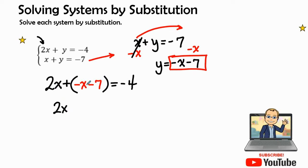So I have 2x plus a negative x. Positive and a negative is a negative, so it has a negative x. Positive and a negative is a negative, so it's going to be minus 7 equals a negative 4. Looks like I can combine like terms here. 2x minus x is x. x minus 7 equals a negative 4.